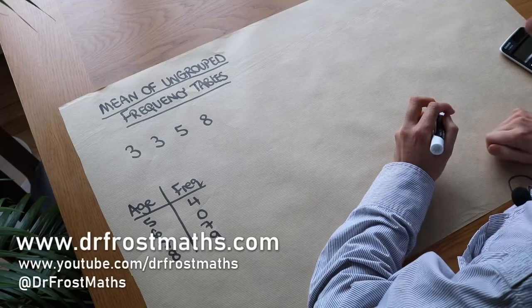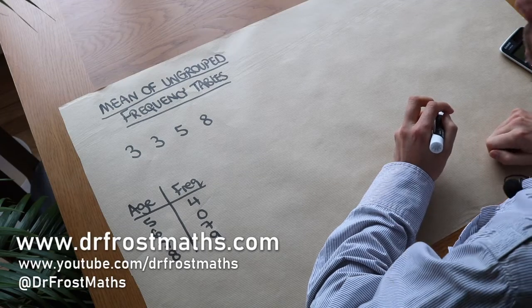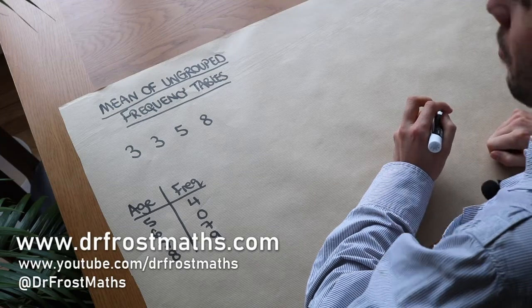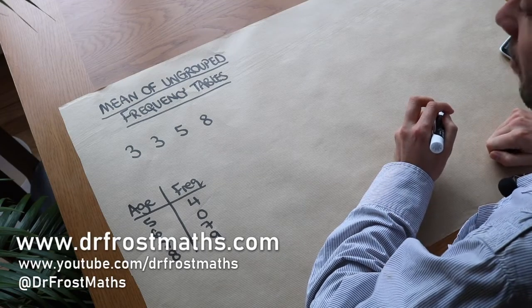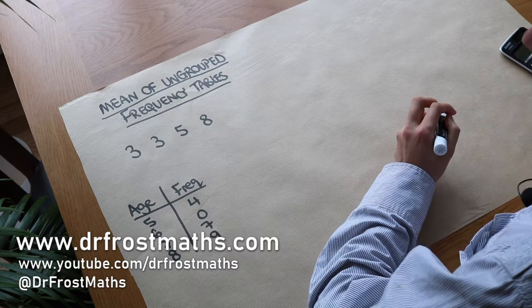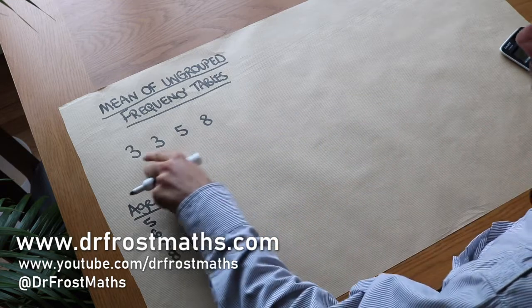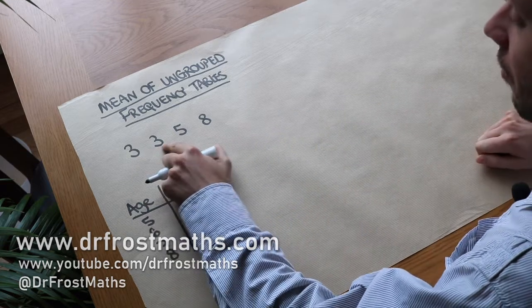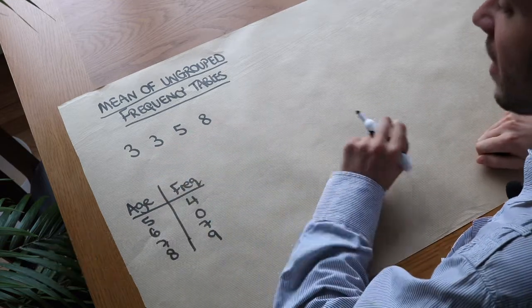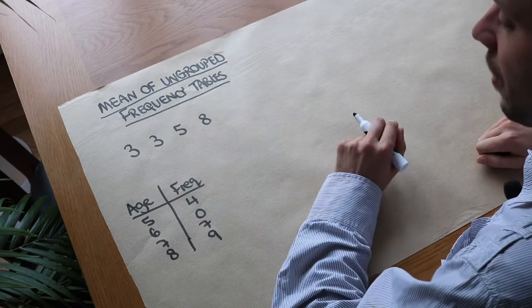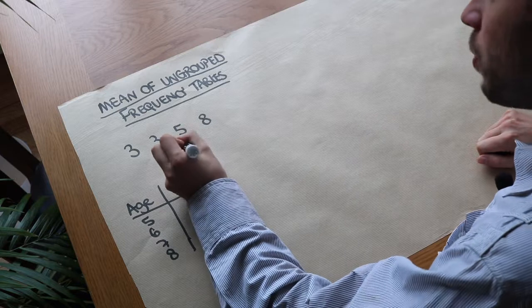Hello and welcome to this video on finding the mean of ungrouped frequency tables. Now let's just say we had four values like this: 3, 3, 5, 8, and we wanted to find the mean. What would we do?